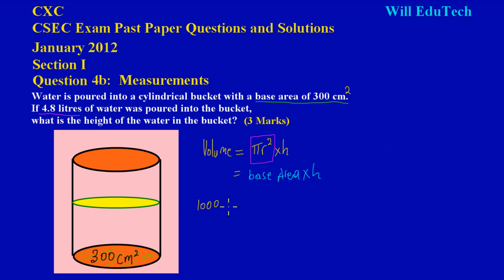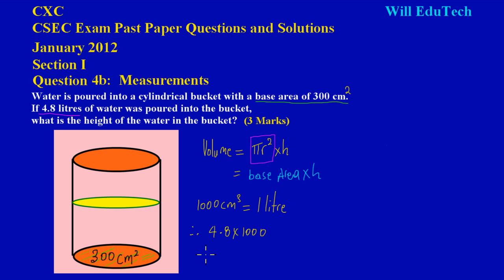One thousand centimeters cubed is equal to one liter. Therefore, to convert 4.8 liters to centimeters cubed, I multiply 4.8 by one thousand, giving us four thousand eight hundred centimeters cubed. So the volume of water inside the cylindrical bucket is four thousand eight hundred centimeters cubed.